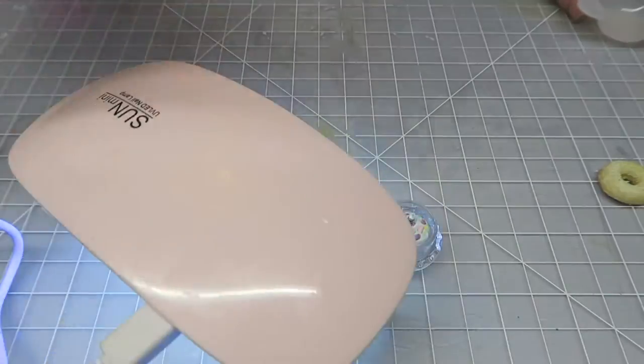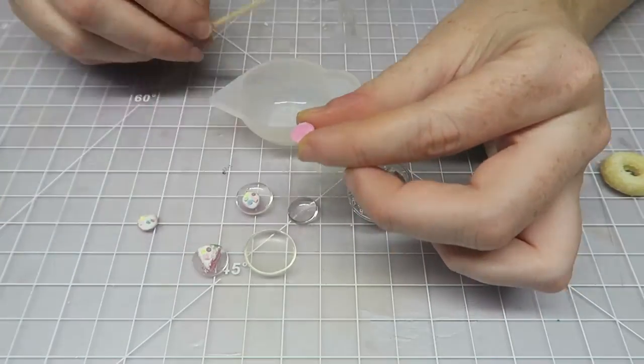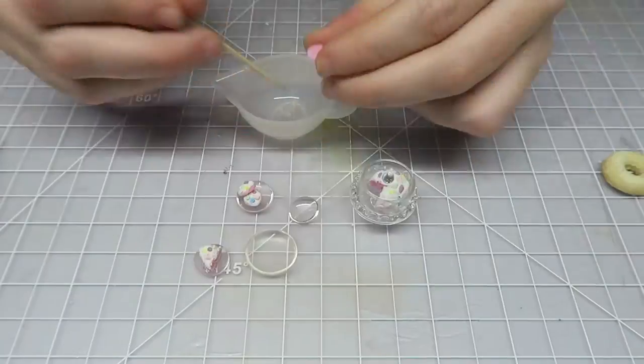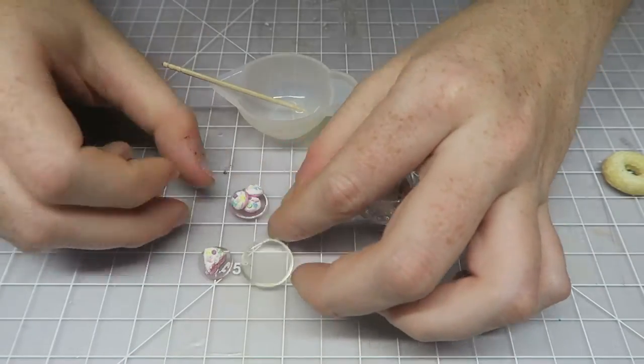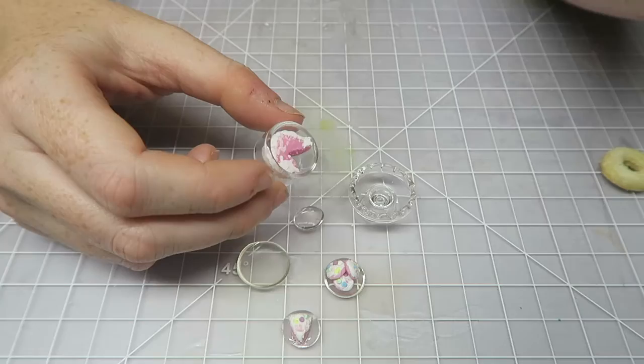You can also glue whatever baked items you want to be on the plate using a tiny amount of UV resin and a toothpick. So that's what I did as well. I made a plate with the cake slice as well as plates with cookies.